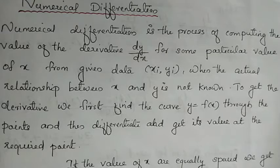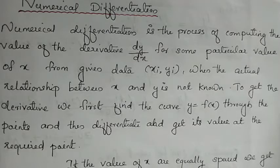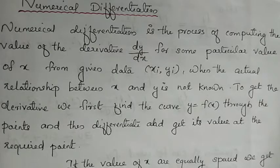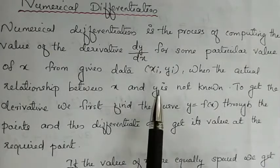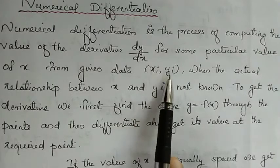If we have a set of tabular values xi and yi, we can obtain the relationship between x and y and put the function as y = f(x). If we have a set of x and y values, we can obtain the curve.